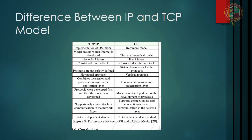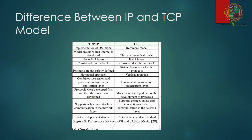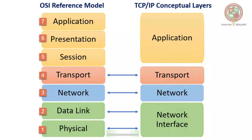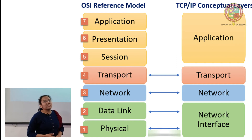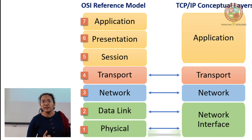Now we move on to the TCP/IP model. It is similar to the OSI model, but TCP stands for Transmission Control Protocol and it has four layers instead of seven. The four layers are: network access layer, internet layer, transport layer, and application layer.